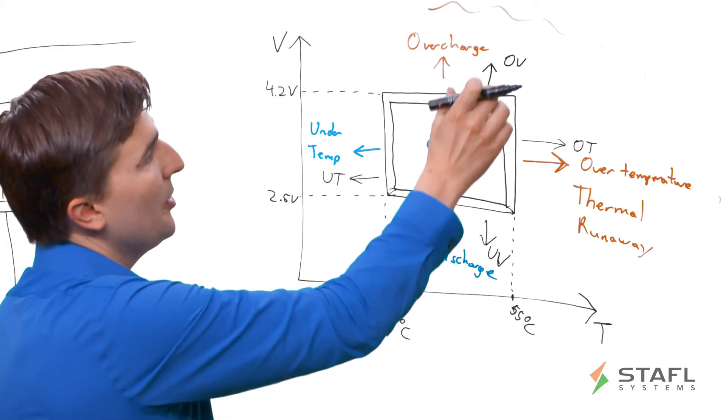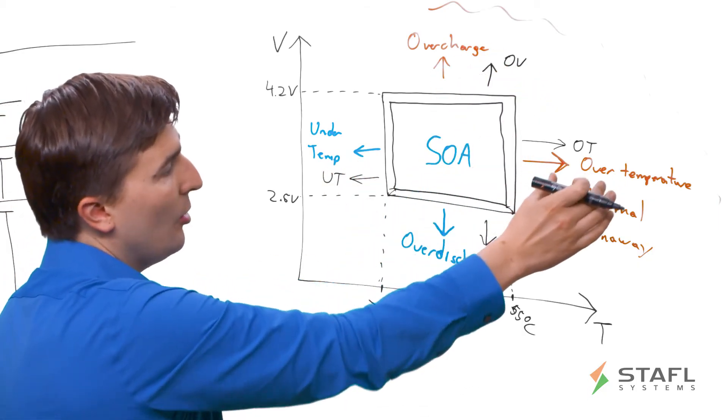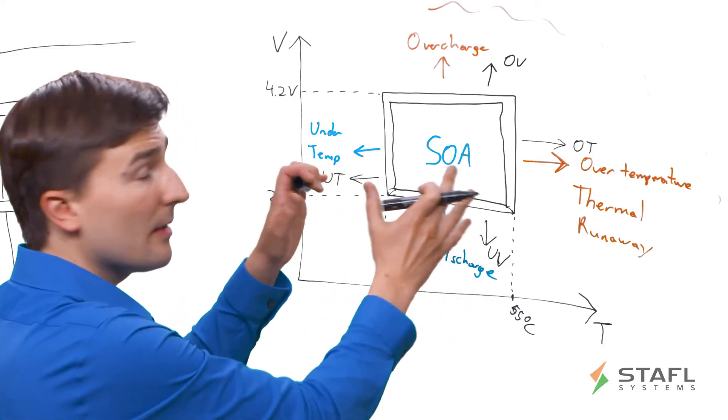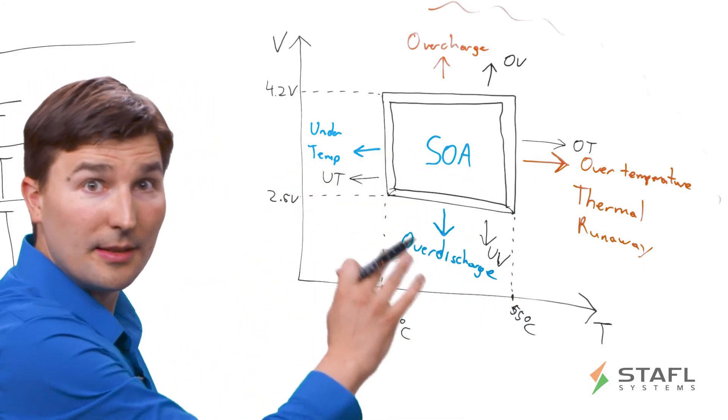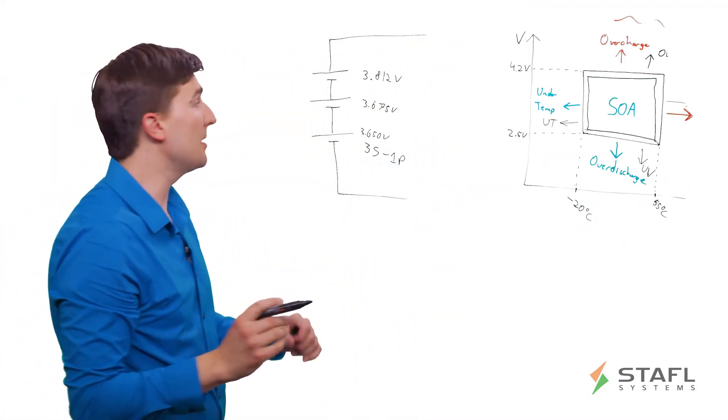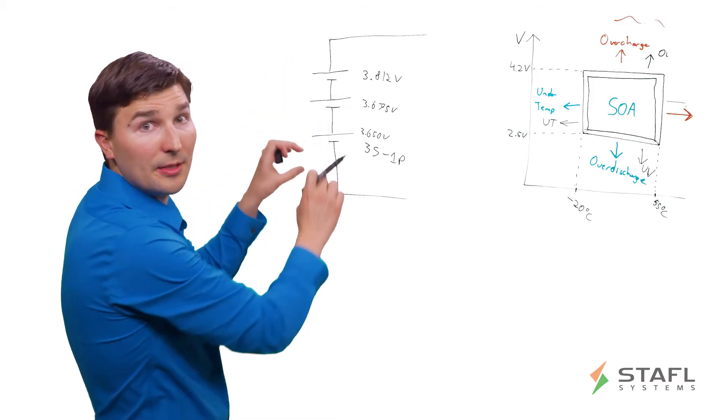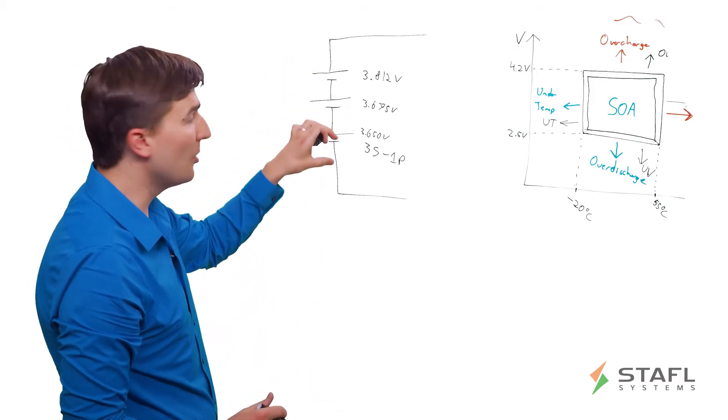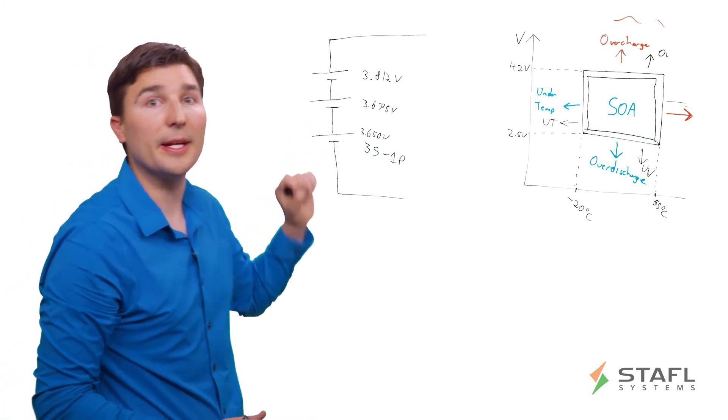And so you can have cell OV, cell OT, cell UV, and cell UT faults. And this, remember, this has to be for every single cell in the system. So you can't just look at a single cell and assume that it's going to be safe. You have to look at every single cell. And if one cell is getting too hot, too overcharged, too over-discharged, you need to shut down or derate operation of the system.